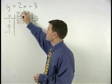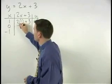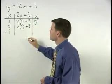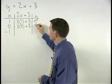Plugging a 0 into the equation for x, we have 2 times 0 plus 3, which is 0 plus 3, or 3.